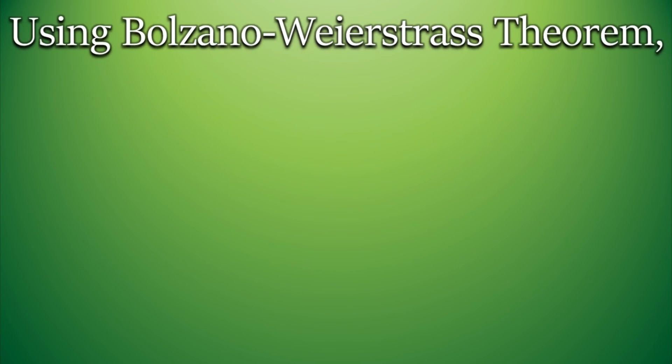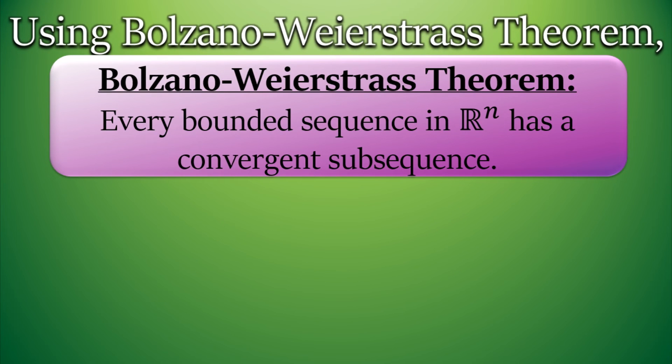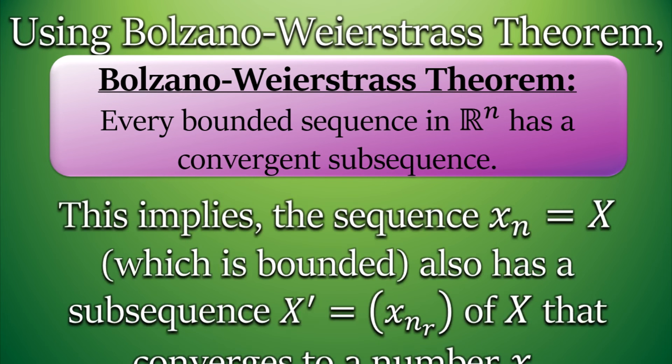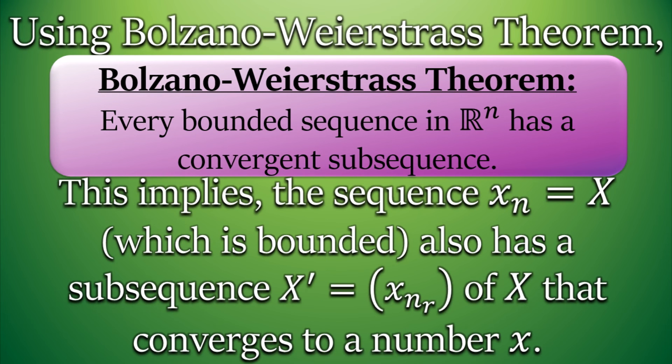So what the Bolzano-Weierstrass theorem says: Every bounded sequence in ℝⁿ has a convergent subsequence. This implies that the sequence X, which is bounded, also has a subsequence X' that converges to a number x. Also, we call the elements of subsequence X' as xₙᵣ, as they are basically the elements of xₙ.